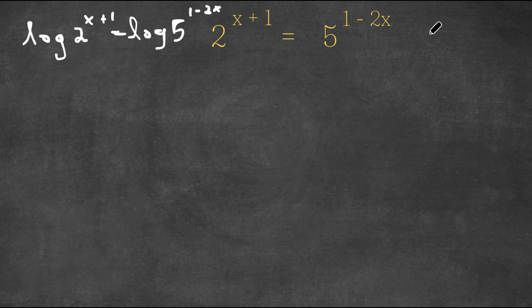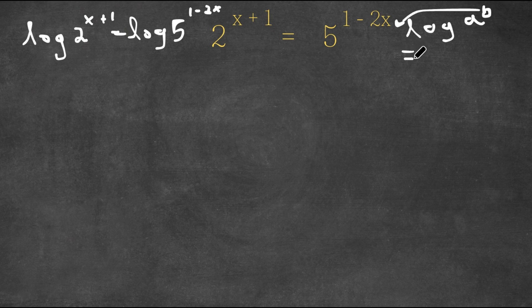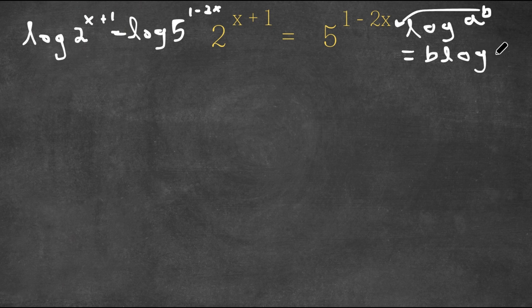Now an important property of logarithms is that if I have something in the form log a to the power of b, I can actually move this exponent b to the front of the logarithm. So this would be equal to b times log a.